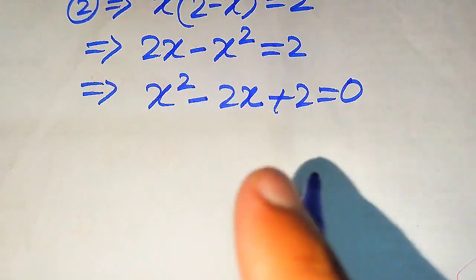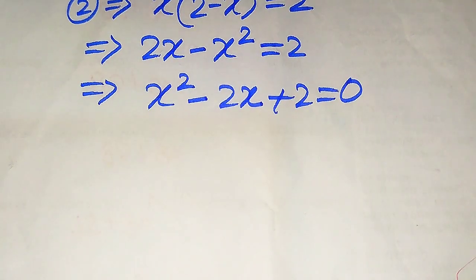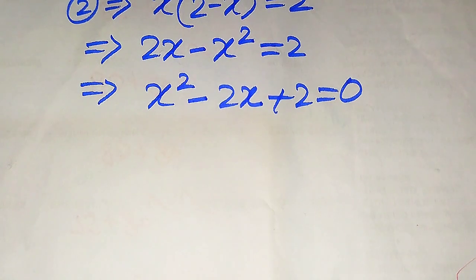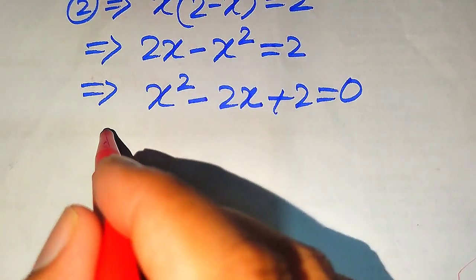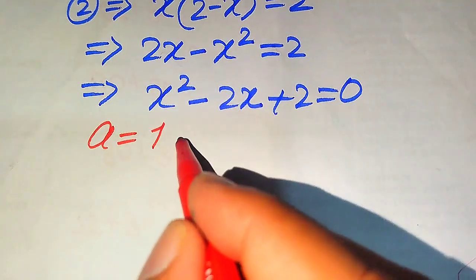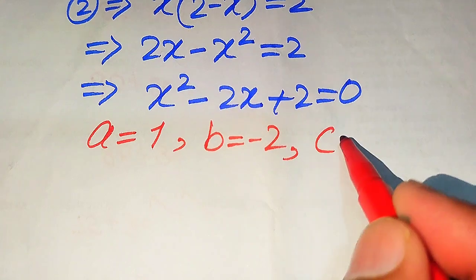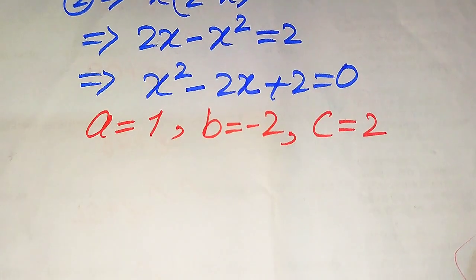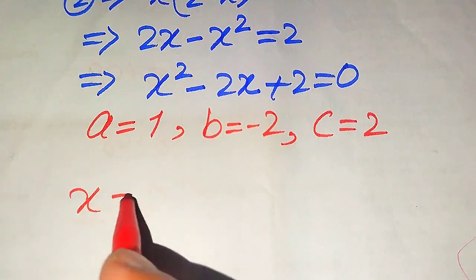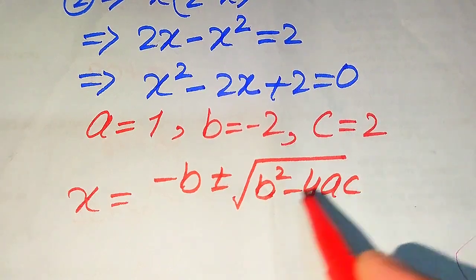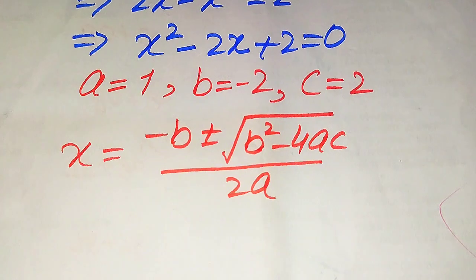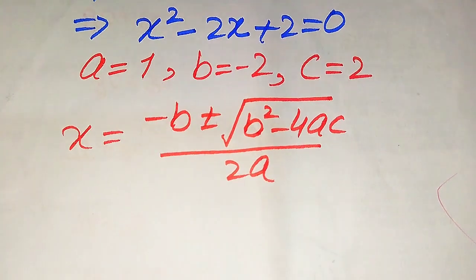This equation is now a quadratic equation in x. There are three methods to solve a quadratic equation: factorization, completing the square, and the quadratic formula. Here we use the quadratic formula. The coefficients are a equals 1, b equals minus 2, and c equals plus 2. The quadratic formula is x equals minus b plus or minus square root of b squared minus 4ac, divided by 2a.